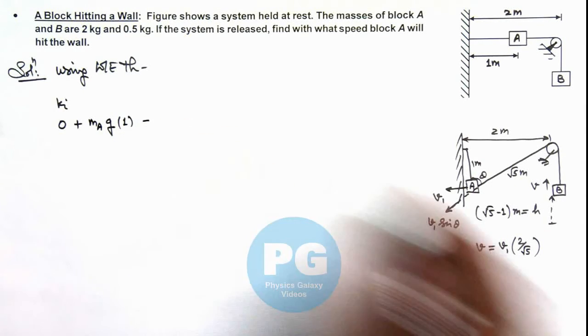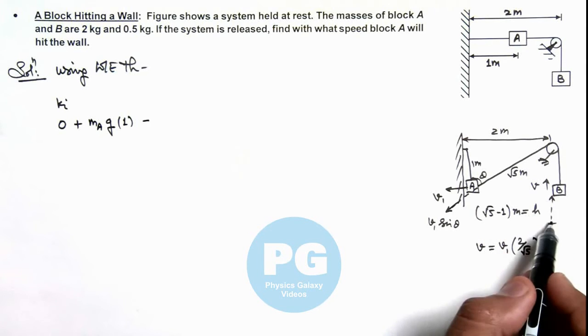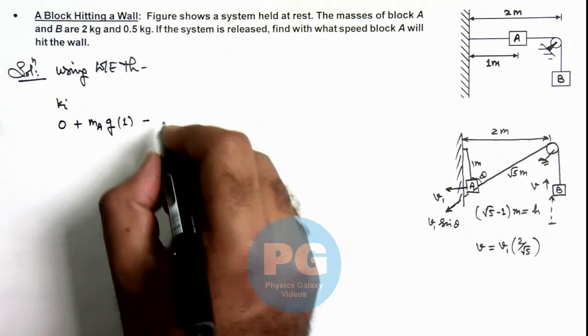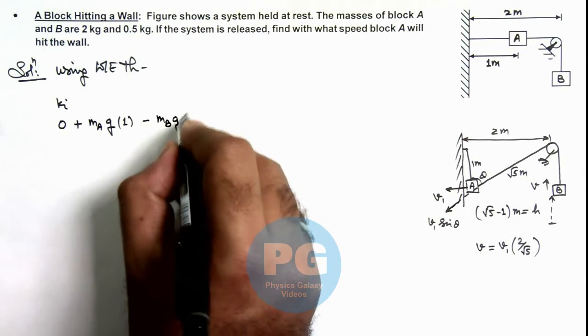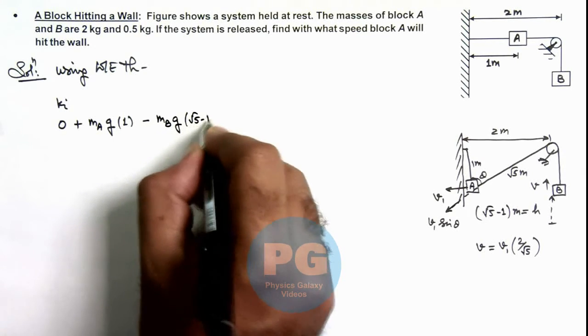Minus work done by gravity on block B, it is in opposite direction so work done by gravity is negative. This is mass of block B, g, height would be root 5 minus 1 meter.